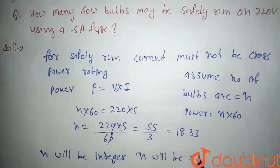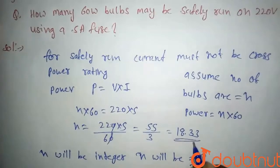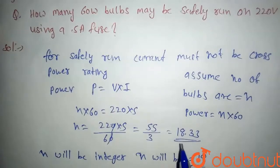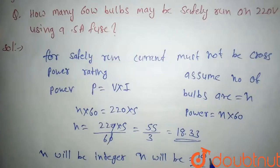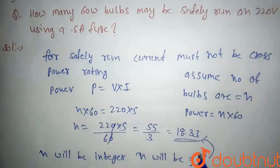18, because we can't say the number of bulbs are 18.3. It is a number, so it should be integer. So our answer will be 18. Why we took 18? Because it is near to 18.33.